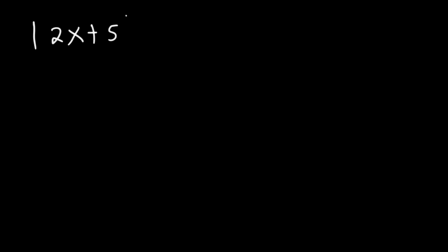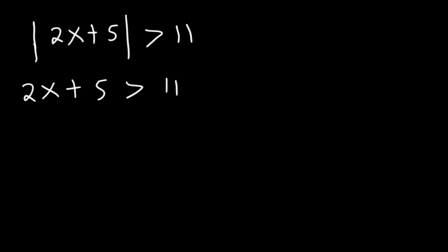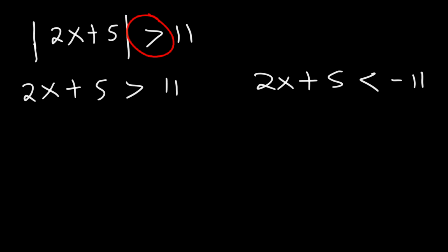Let's say we have the absolute value of 2x plus 5, and it's greater than 11. What I recommend doing is to write two inequalities. The first one is going to look exactly the way you see it without the absolute value symbol. For the second one, rewrite the stuff inside the absolute value, change the direction of the inequality, and change the sign of the number — so instead of 11, we're going to have negative 11. Whenever you have a greater than symbol, this is going to be an 'or' expression. If there's a less than symbol, this will be an 'and' expression.